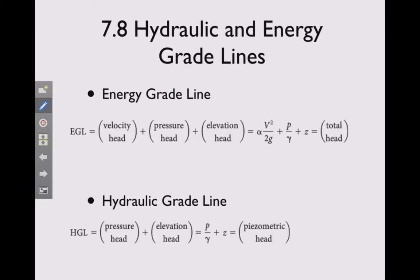So we define the energy grade line as being the addition of the velocity head, pressure head, and elevation head. So in terms of the energy equation, that is going to be alpha v squared over 2g plus pressure over gamma plus z. This is the total head, the total energy head within the system at any point. And of course, this is the term that appears on both sides of the energy equation. And the hydraulic grade line, on the other hand, is just the pressure head times the elevation head. And we have seen this term many times. Pressure over gamma plus z is just the piezometric head. So these are what the energy and the hydraulic grade lines are.